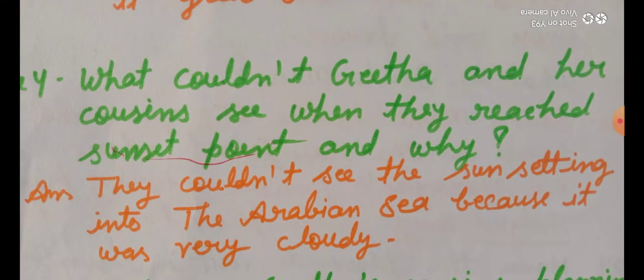Question number 4: What couldn't Gita and her cousin see when they reached sunset point, and why? Jib Gita aur uske cousin sunset point per pohunche, toh wo kya nahi dheekh sakee aur kyi? Answer: They couldn't see the sun setting into the Arabian Sea because it was very cloudy. Kyunki uus din mousam bhoot cloudy yani badlun wala tha.